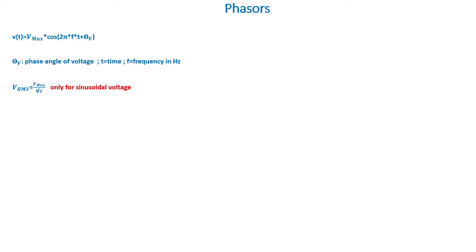The RMS value of the voltage is the peak (maximum) value of the voltage divided by the square root of 2. This is only valid for sinusoidal voltages — if it's not a sinusoidal voltage, you cannot use this equation. RMS stands for root mean square.